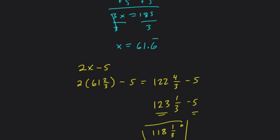So if you add 118 and 1 third, and 61 and 2 thirds, you will get 180 degrees. They are supplementary to each other. All right, thanks.